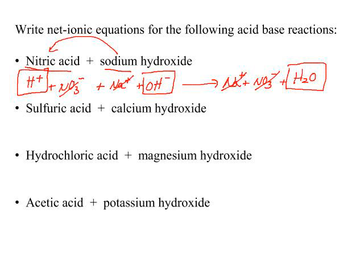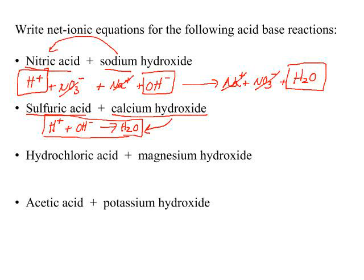If you look at sulfuric acid, you should get exactly the same reaction. Since sulfuric acid is a strong acid and calcium hydroxide is a soluble strong base, the net ionic equation is H+ + OH- → H2O. You should pause the video at this point, write the complete ionic equation, cancel your spectator ions, and prove to yourself that you do come up with this net ionic equation.